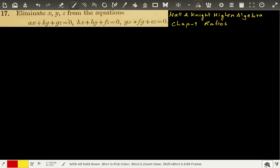Now, what we have to do is find the eliminant of x, y and z from these three equations. To understand what eliminant is, I would suggest that you look at problem number 16. I have already explained what eliminant is and how to find it.